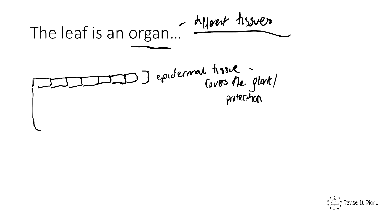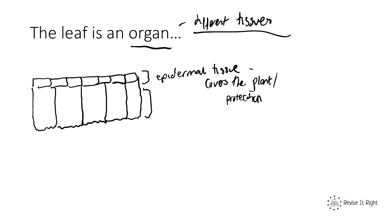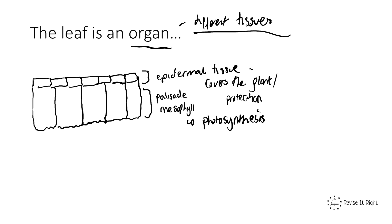Moving down from that, you've got a layer called the palisade mesophyll. These are all plant cells, made up of palisade cells. The palisade mesophyll is where photosynthesis happens in the leaf.